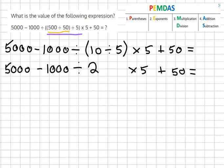And now we're moving on to multiplication and division and we go from left to right. So 5,000 minus 1,000 divided by 2 gives us 500 times 5 plus 50.